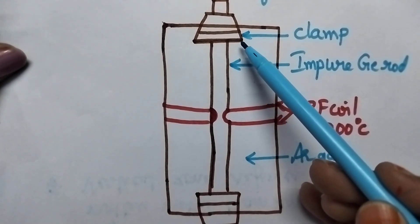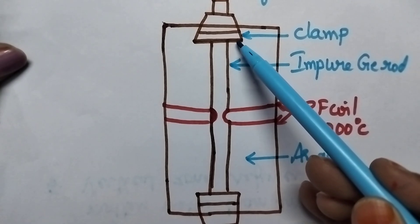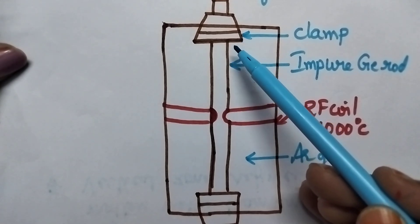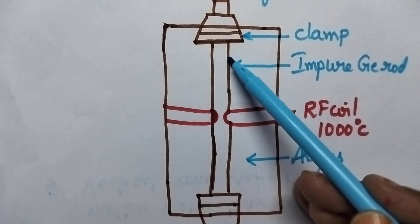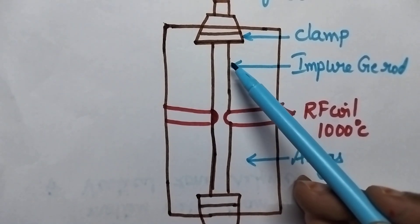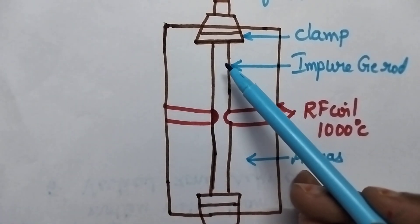Whenever the RF coil is slowly moved down, the impurities present in the germanium rod also move in downward direction. Since the impurities are more soluble in the molten metal...